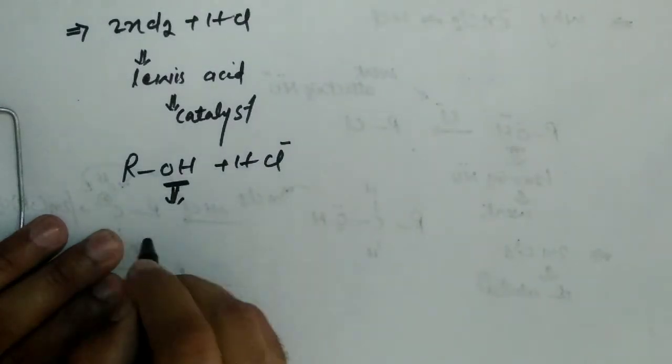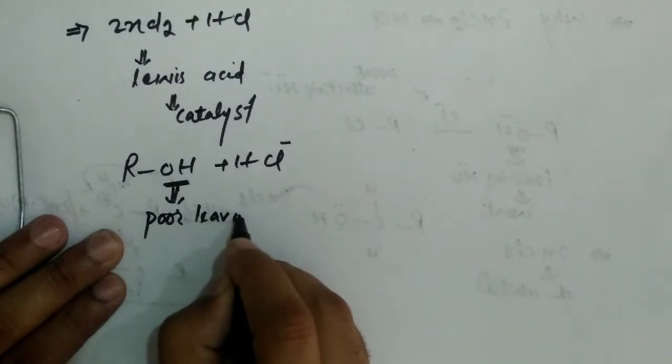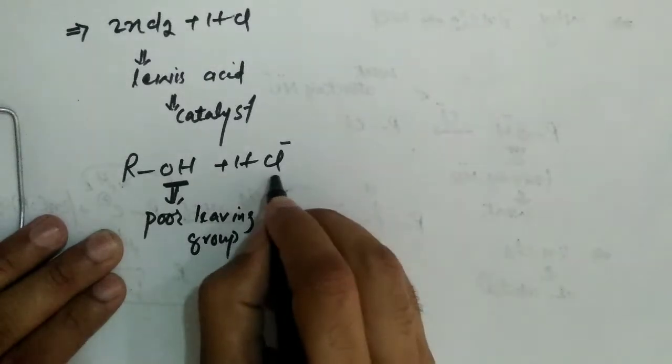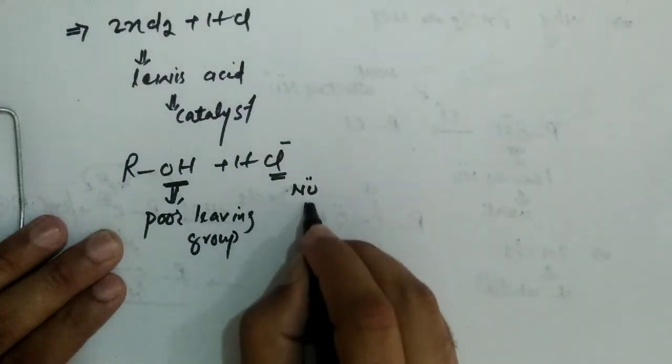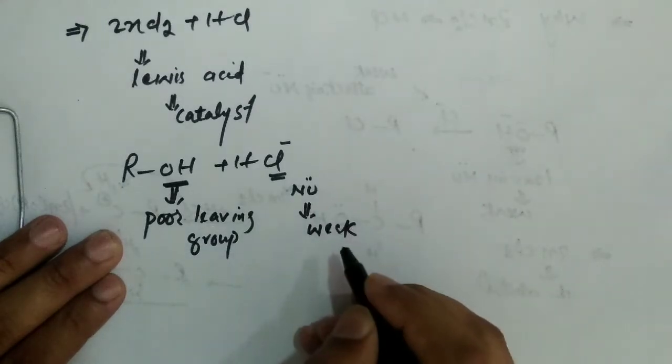This OH group is a poor leaving group while the attacking nucleophile is also a weak nucleophile.